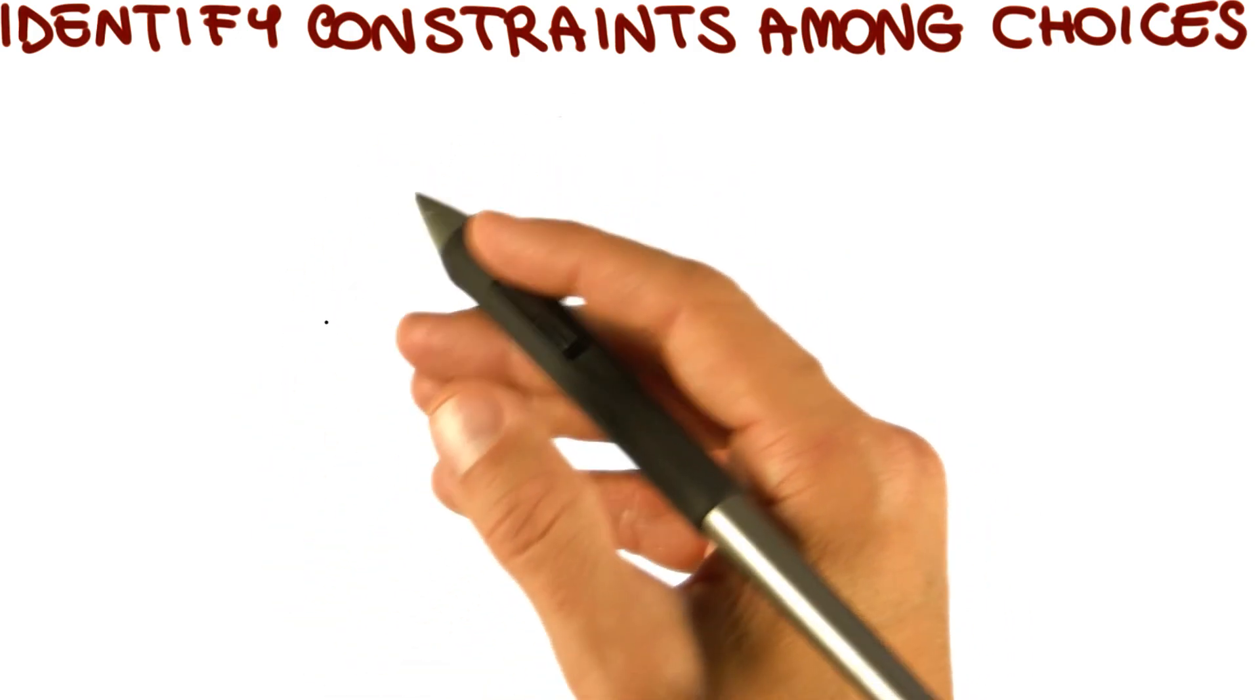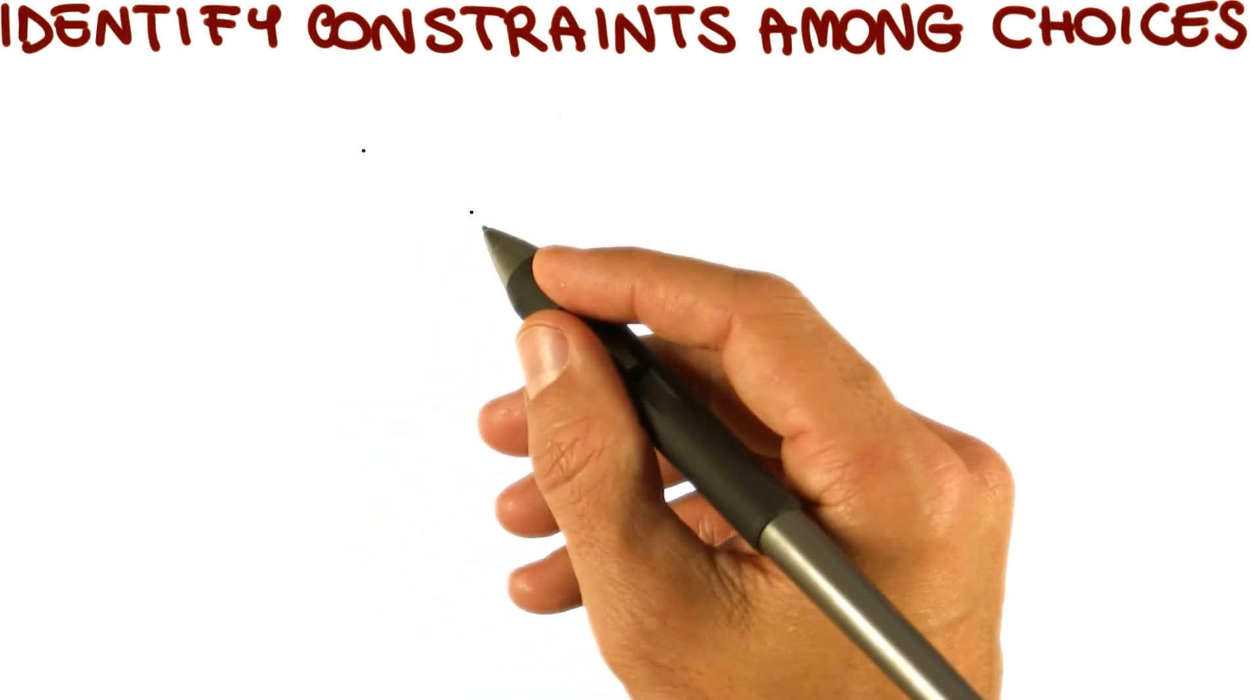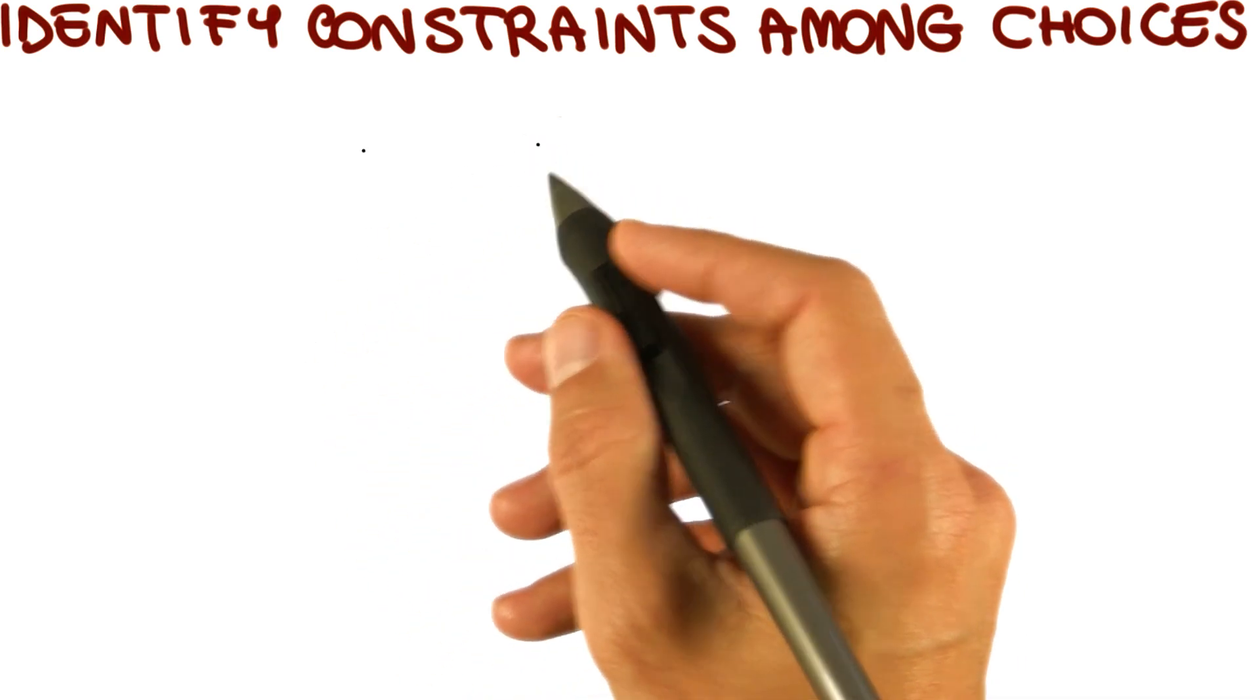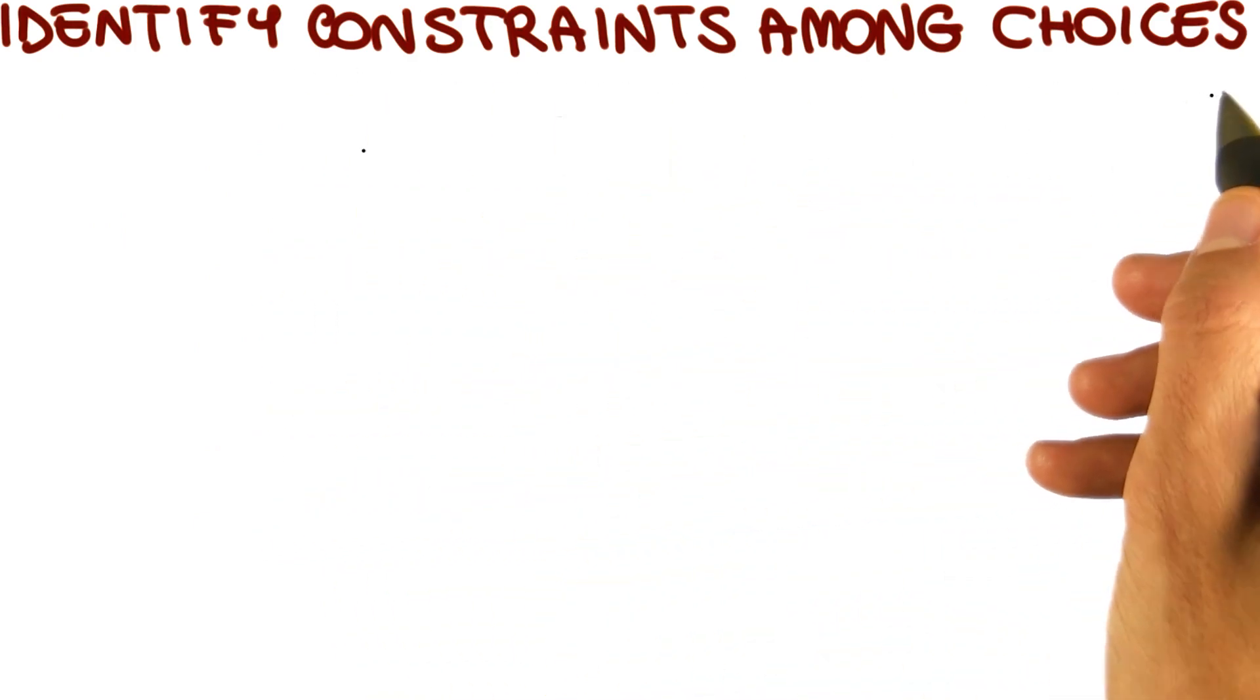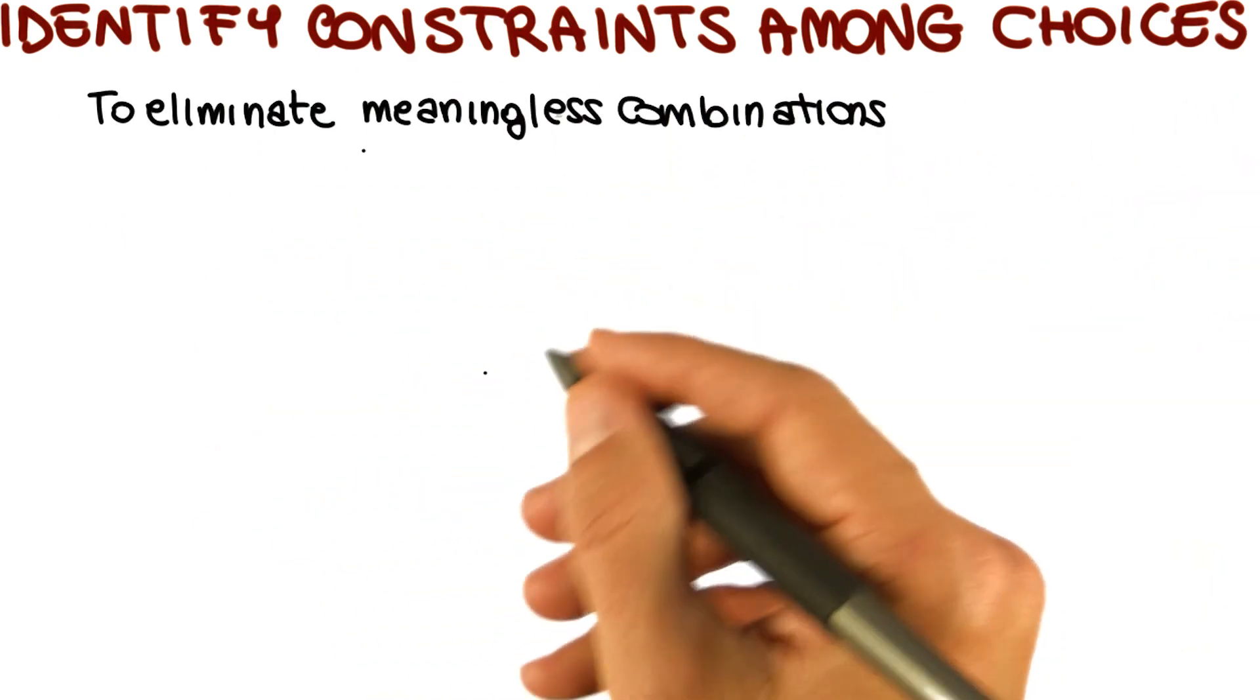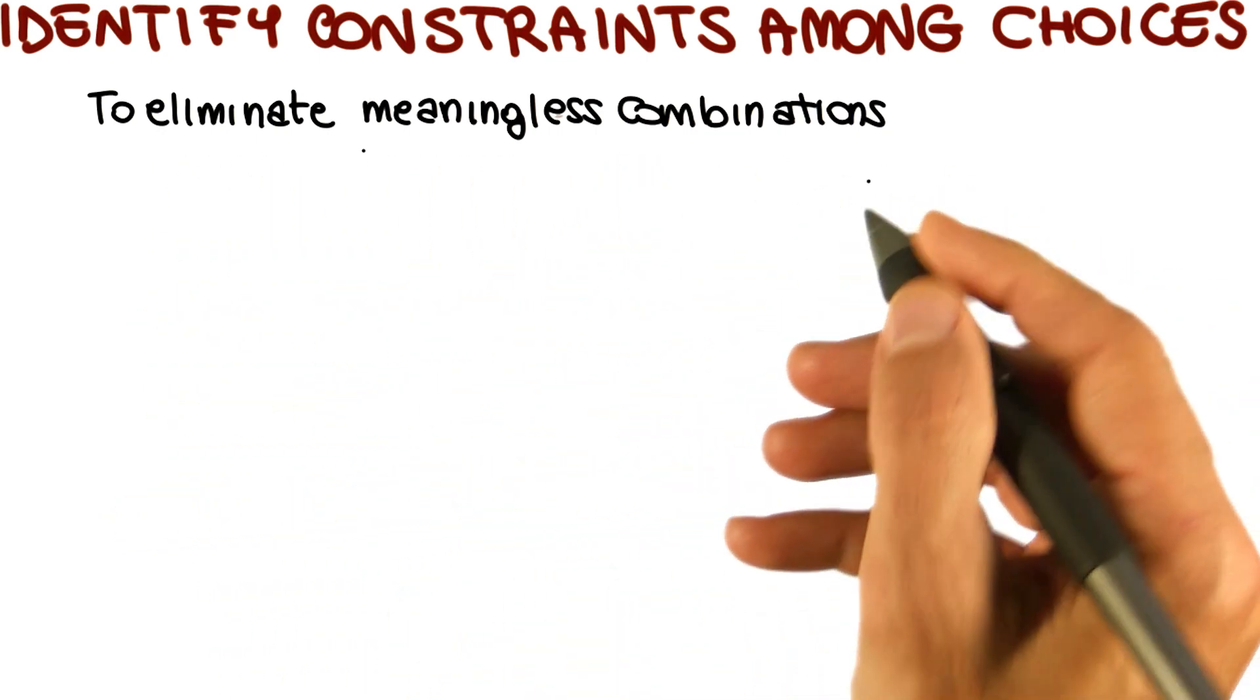I mentioned we were going to look at some way of addressing that problem. This is exactly what happens in the next step of the category partition method, in which we identify constraints among choices. Why do we identify these constraints? We do that to eliminate meaningless combinations of inputs.